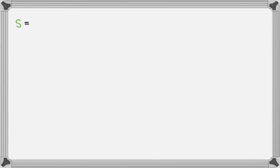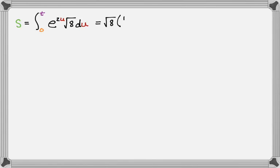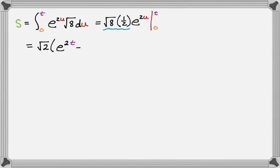Now we can set up our integral. S is the integral from zero to t of the norm of r prime, changing the variable to u, du. Factoring out radical eight and integrating e to the two u with a one-half factor gives radical eight over two times e to the two u, evaluated from zero to t. Radical eight is two root two, so two root two over two simplifies to radical two. So s equals radical two times the quantity e to the two t minus one.